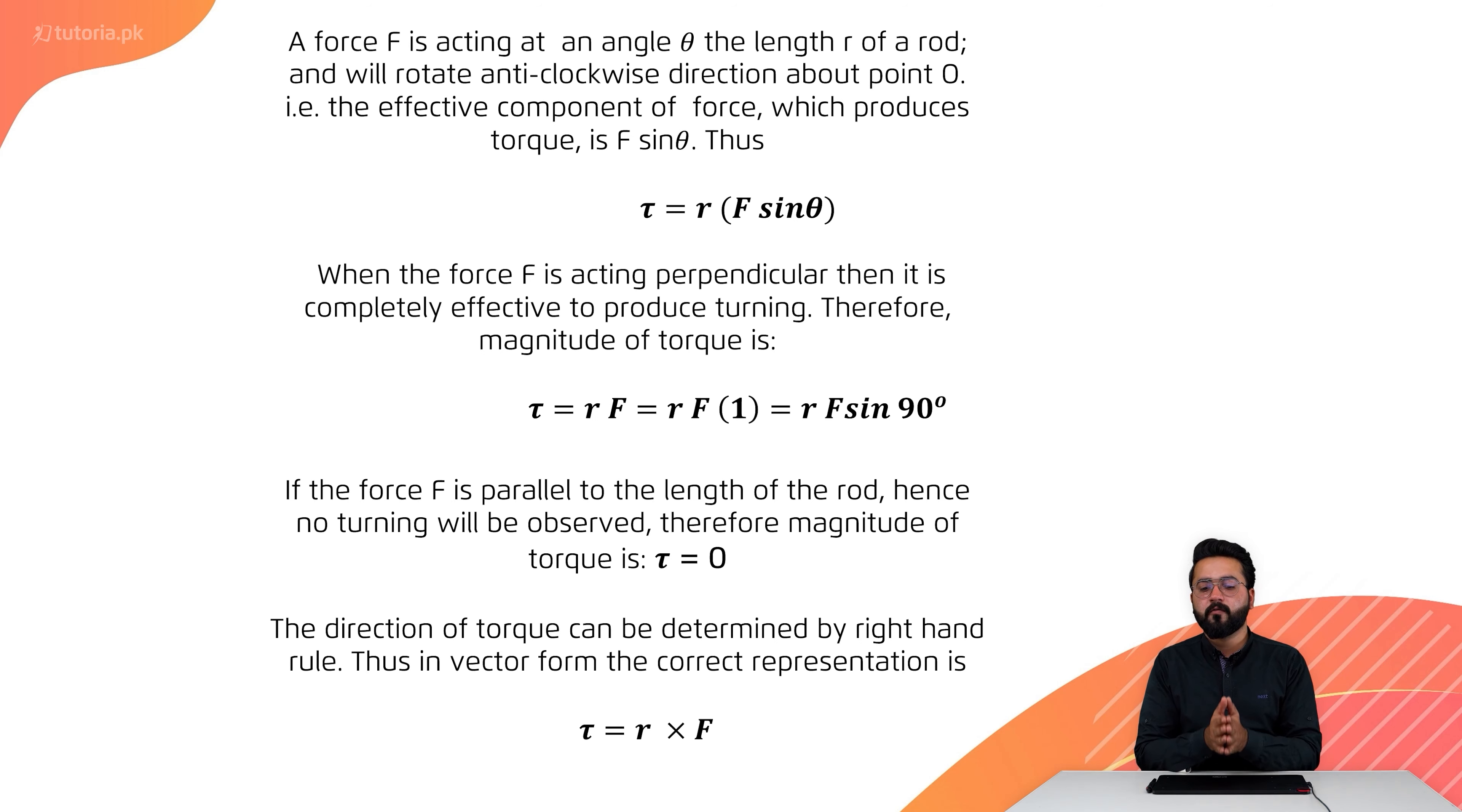The effective component of force which produces torque is F sin theta. Thus, the torque will be equal to R multiplied by F sin theta. This is the effective component that produces turning when we apply force at an angle.